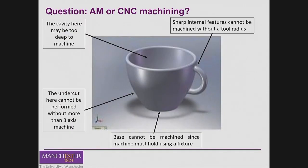With additive manufacturing you remove all of those problems because you are building layer by layer, so you are not limited in terms of the geometries you can create. You also build the part in a single step, so you don't have to go through multiple stages, and you are not limited by the depth of your cavity.